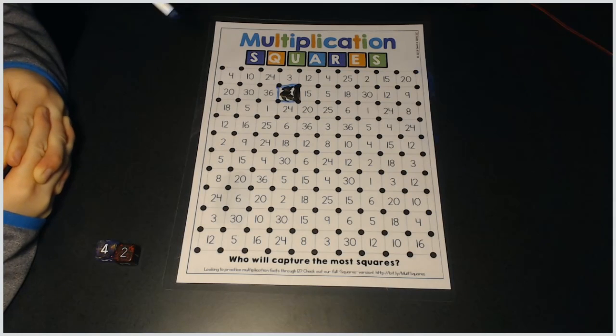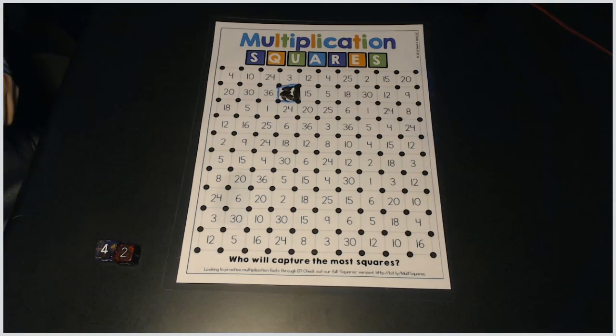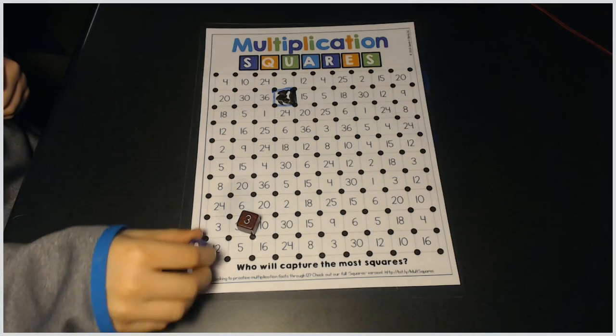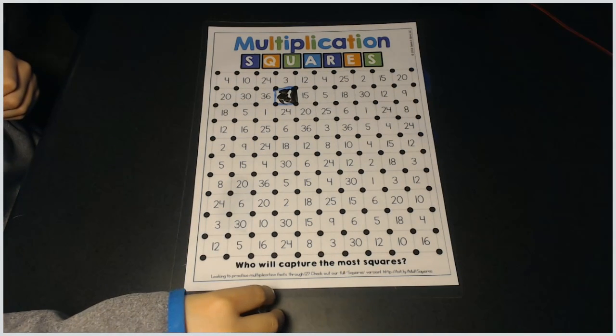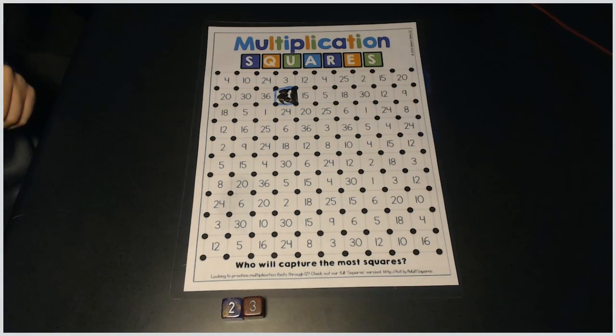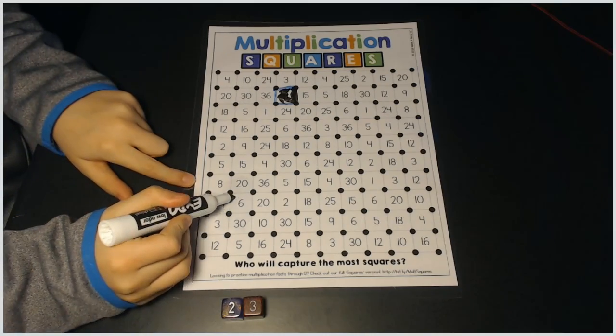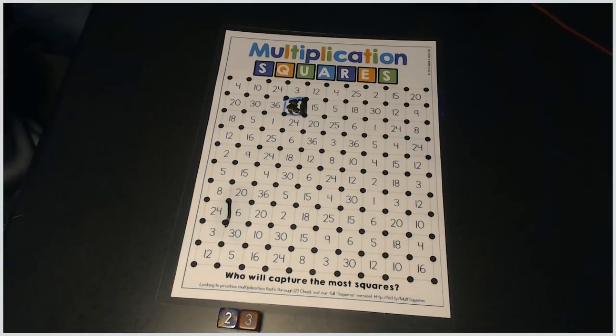Okay, let's play a couple rounds. You go ahead and roll the dice. Three times two. What's three times two? Six. Six. So put one line around a six. All right, my turn.